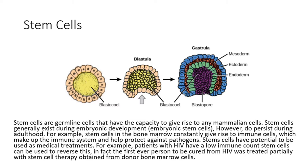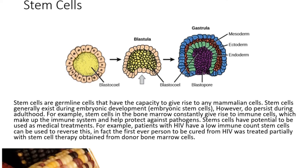Stem cells have potential to be used as medical treatments. For example, patients with HIV have a low immune count — stem cells can be used to reverse this. In fact, the first ever person to be cured from HIV was treated partially with stem cell therapy obtained from donor bone marrow cells.